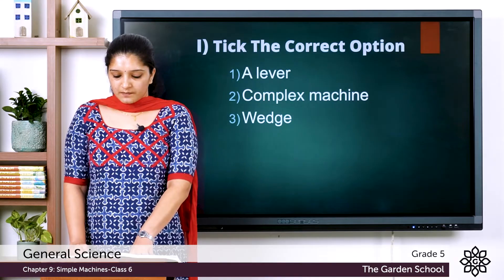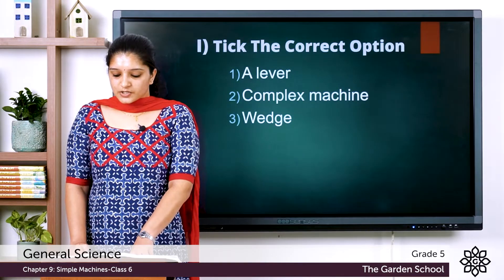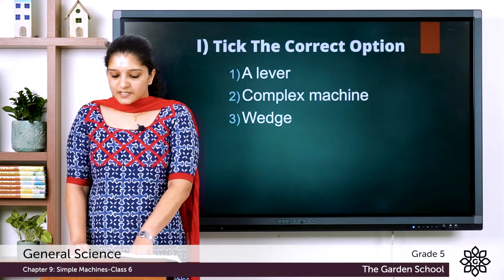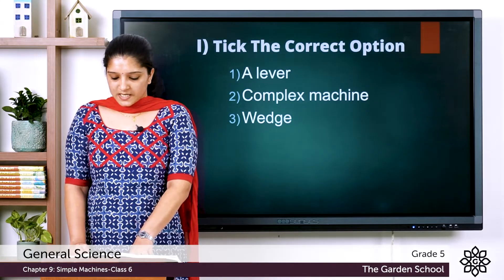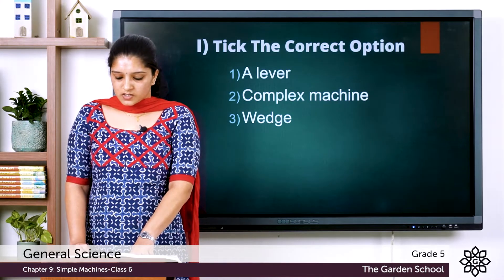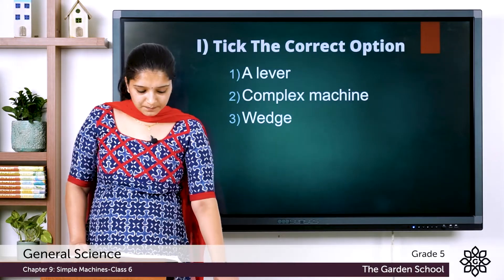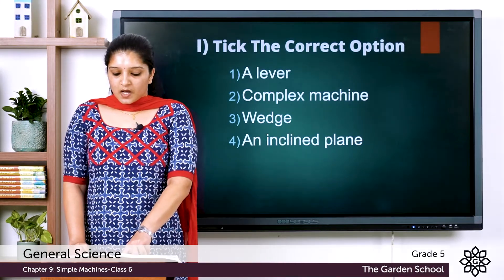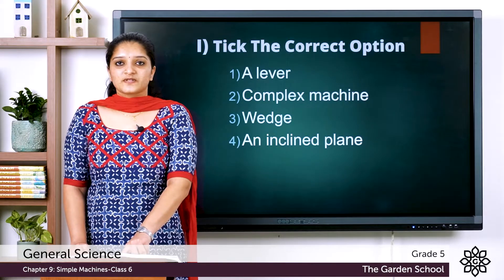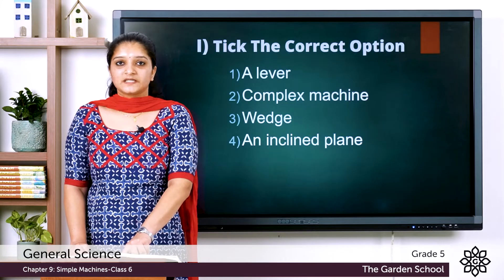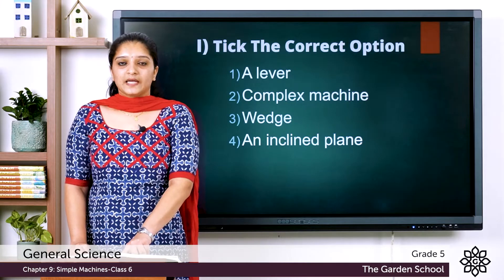The fourth question: a simple machine consisting of a slanting flat slope that helps in the movement of heavy objects is — the options are a lever, a wedge, an inclined plane, a screw. The answer is an inclined plane. A simple machine consisting of a slanting flat slope that helps in the movement of heavy objects is an inclined plane.